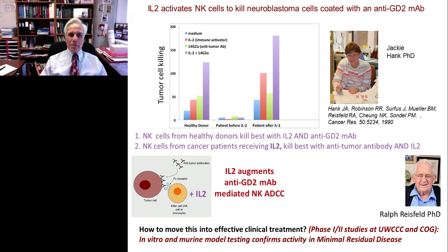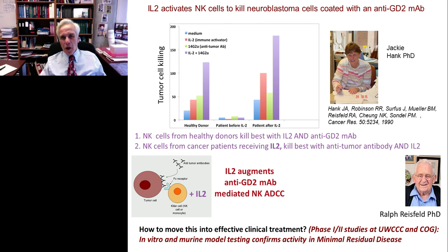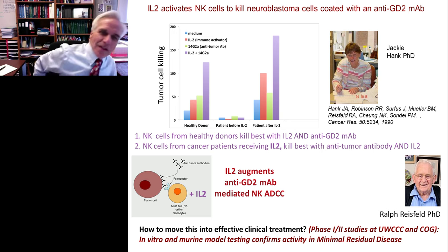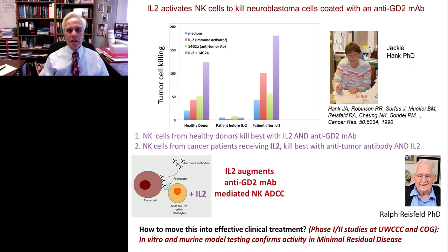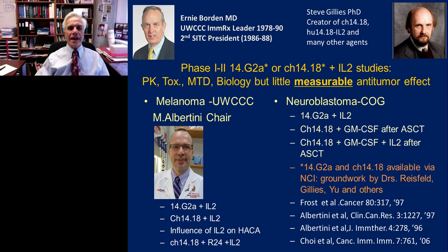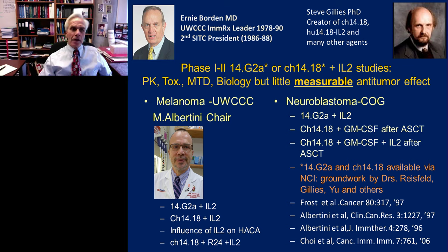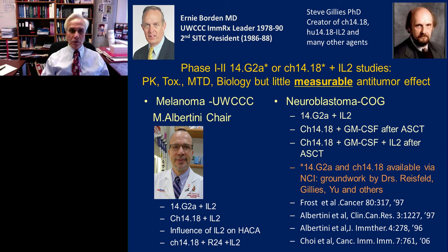Blood from healthy donors worked well in this system, but blood from cancer patients didn't work in vitro very well. However, if we gave those same patients in vivo interleukin-2, it activated their natural killer cells so that now they could kill neuroblastoma cells in the setting of this monoclonal antibody and IL-2. We then took that concept through in vitro testing, then mouse testing, then into phase one clinical trials. With help from several collaborators, we tested this in adults with melanoma at the UW Cancer Center and in children with neuroblastoma through the Children's Oncology Group, giving patients IL-2 together with anti-GD2 monoclonal antibody.